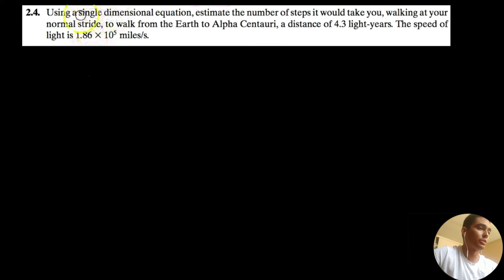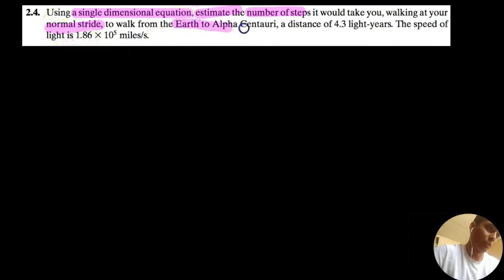But anyway, so using a single dimensional equation, I totally forgot to do that last time for the sake of the example, but let's try it this time. Estimate, estimate, that's a keyword, the number of steps it would take you walking at your normal stride, normal, whatever that means. What do you know about normal? To walk from Earth to Alpha Centauri. Like, are you kidding me? So at least the distance is given, the distance of 4.3 light years, and the speed of light.